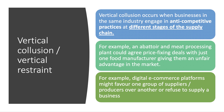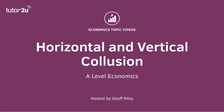Vertical collusion occurs when businesses in the same industry engage in anti-competitive behavior but at different stages of the supply chain. It typically occurs between a manufacturer and a retailer, but could also involve, for example, an abattoir and a meat processing business making a price-fixing deal. A digital e-commerce platform might favor one group of publishers or suppliers over another, or refuse to supply a particular business — this refusal to supply is called vertical restraint and is deemed to be anti-competitive.